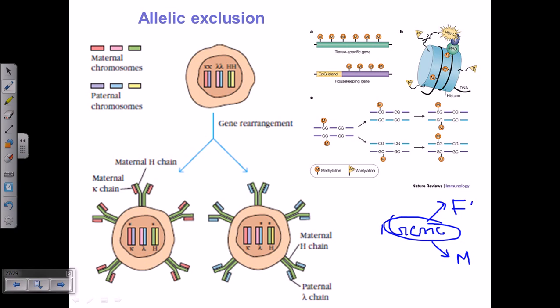So this is one copy — copy number one, and this is copy number two. Both copy number one and two will be called alleles of each other.